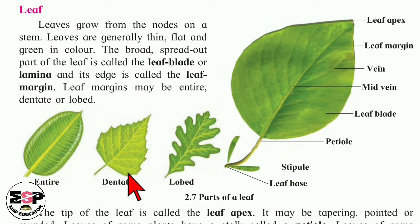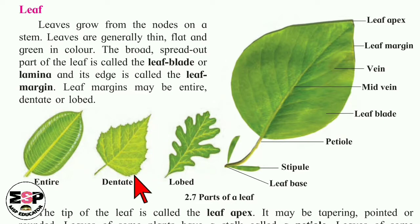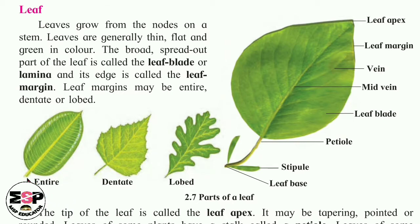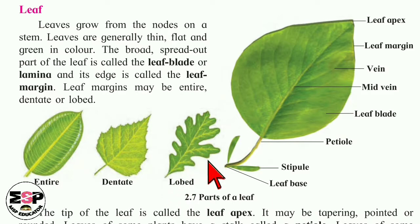Then next is dented — it means a zigzag-like manner. You will see the rose leaf — its border is dented, zigzag-like. And the banyan leaf — its border is entire. And lobed — lobed means like our ear, the bottom part is lobed shape. So its name is lobed margin. Understood, everyone?